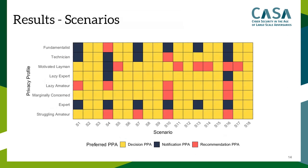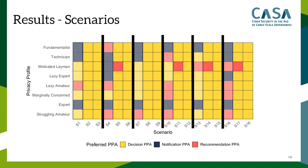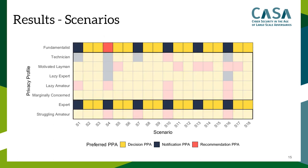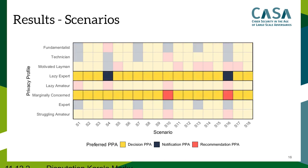Here is an overview of the PPA choice per profile for each scenario. Looking at scenarios with a medium or high number of requests, we can see that most people would prefer an autonomous decision PPA in those situations. When looking at individual profiles, those with high knowledge prefer notification PPAs in scenarios with low request counts. Those with low knowledge and motivation prefer autonomous PPAs, even in scenarios with low requests — which I found really interesting.